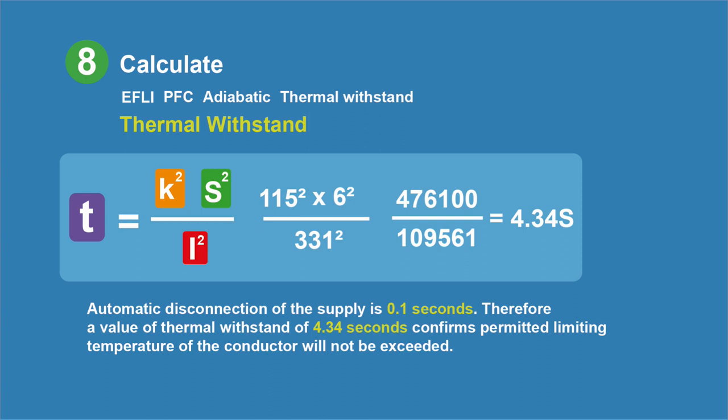Next we consider thermal withstand — this time checking that our live conductors are suitable. If there's a fault, we want to ensure the cable can handle it and the permitted limiting temperature of the conductor will not be exceeded. It's a rearrangement of the adiabatic equation. Using K for the conductor, the size of the live conductors (6mm²), and the fault current — all squared — the calculation gives a thermal withstand time of 4.34 seconds. Since we know automatic disconnection of the supply will occur in 0.1 seconds, the thermal withstand of 4.34 seconds confirms that the permitted limiting temperature of the conductor will not be exceeded during the fault.